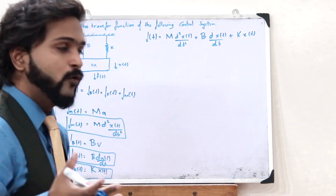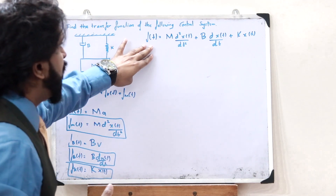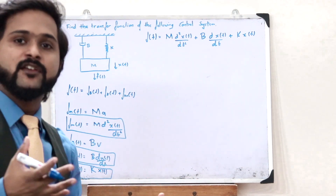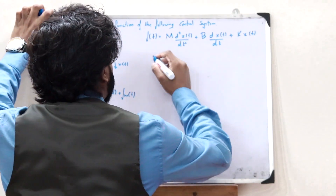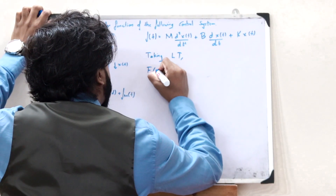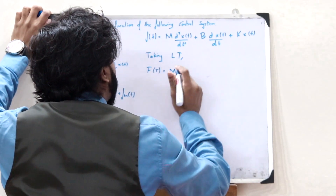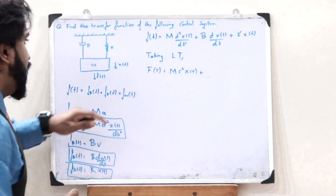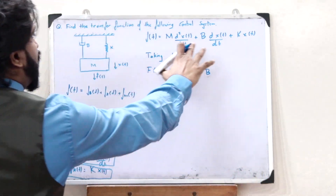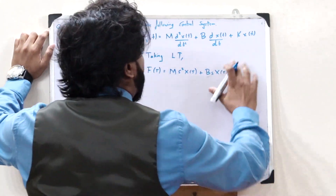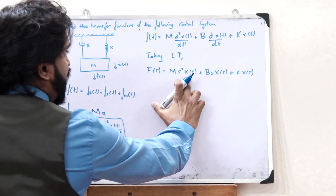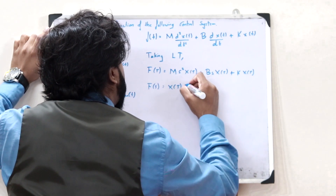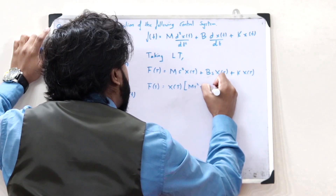We can find it in the frequency domain, so we now convert this into the frequency domain using the Laplace transform. Taking the Laplace transform, this becomes F of S is equal to M into S²·X(S), since it is a second-order derivative, plus B into S·X(S), since it is a first-order derivative, plus K·X(S). The X of S term is common, so F of S is equal to X(S) into (MS² + BS + K).